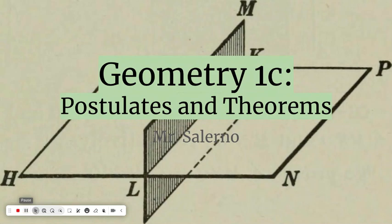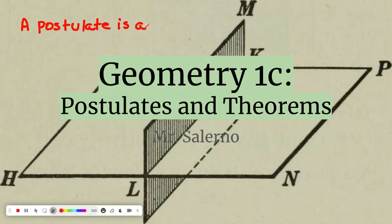So a postulate, and I'll write this out, is a statement that's accepted as fact. You don't need proof on a postulate. And proofs are going to be all over geometry, and we'll talk more about proofs in other videos. So again, a postulate is a statement that is accepted as fact.